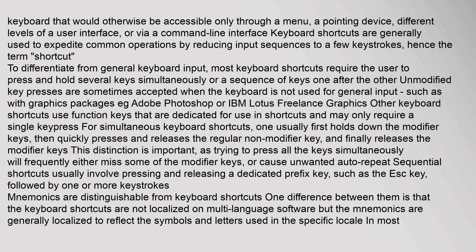Other keyboard shortcuts use function keys that are dedicated for use in shortcuts and may only require a single key press. For simultaneous keyboard shortcuts, one usually first holds down the modifier keys, then quickly presses and releases the regular non-modifier key, and finally releases the modifier keys. This distinction is important, as trying to press all keys simultaneously will frequently either miss some modifier keys or cause unwanted auto-repeat.